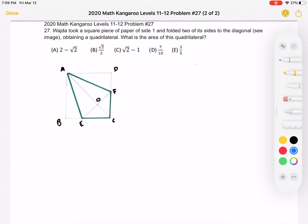First, we want to make sure we know what we're looking for. We're trying to find the area of the quadrilateral. In this image I've drawn over here, that quadrilateral is AECF.